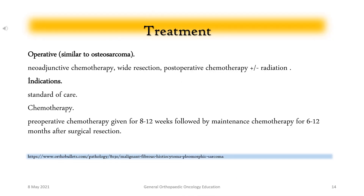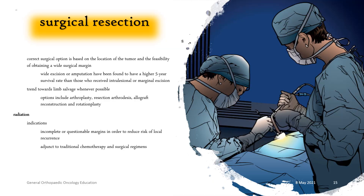Treatment is operative, similar to osteosarcoma. The standard of care includes neoadjuvant chemotherapy, wide resection, and postoperative chemotherapy plus radiation. Preoperative chemotherapy is given for 8–12 weeks, followed by maintenance chemotherapy for 6–12 months after surgical resection. Wide excision or amputation has been found to have a higher 5-year survival rate than intralesional or marginal excision.